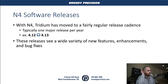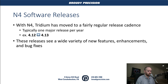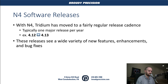With Niagara 4, Tritium has moved to a fairly regular release cadence. Typically we're looking at one major release per year — by major release I mean a major point release, so that would be going from 4.12 to 4.13, which are our latest major releases. These releases typically see the flashy new things: new features, enhancements, and occasionally some bug fixes as well.